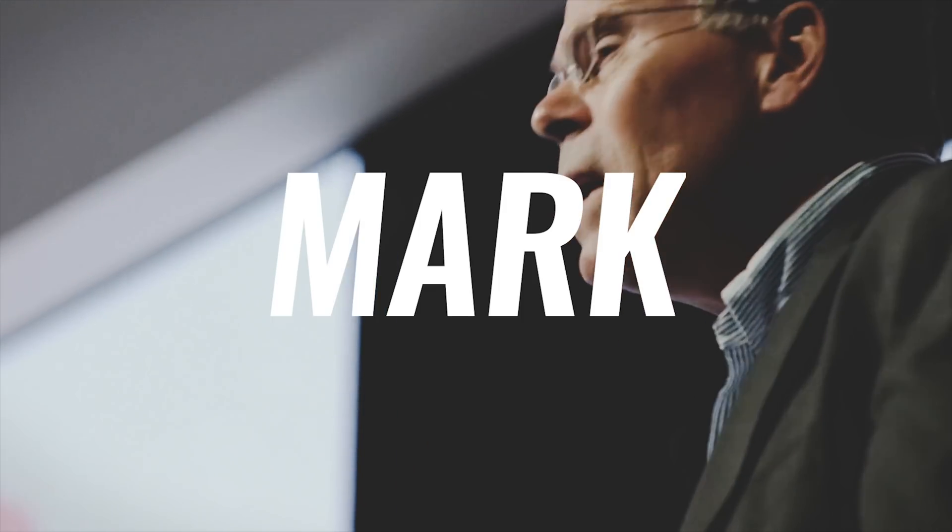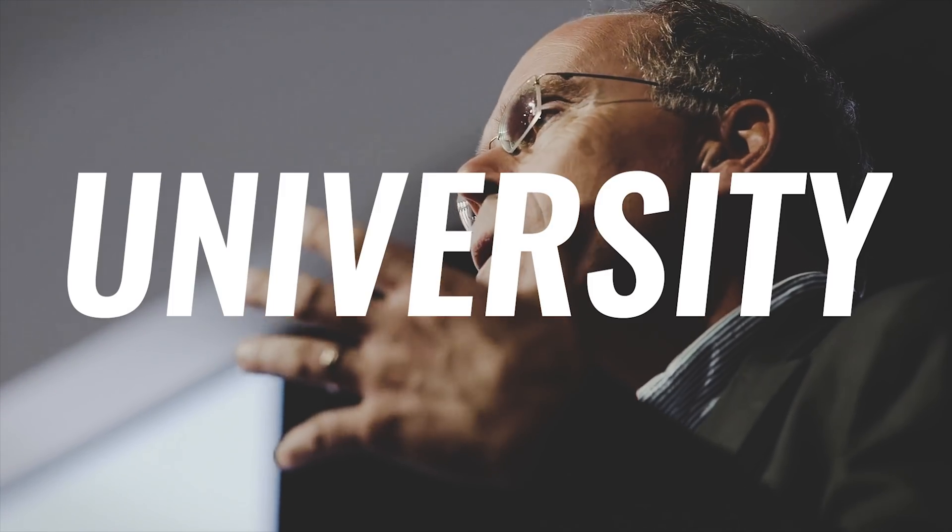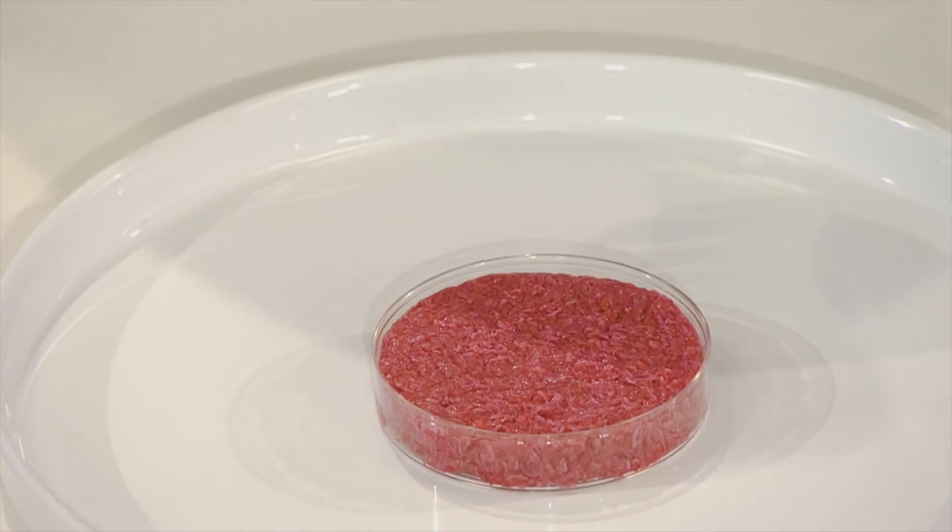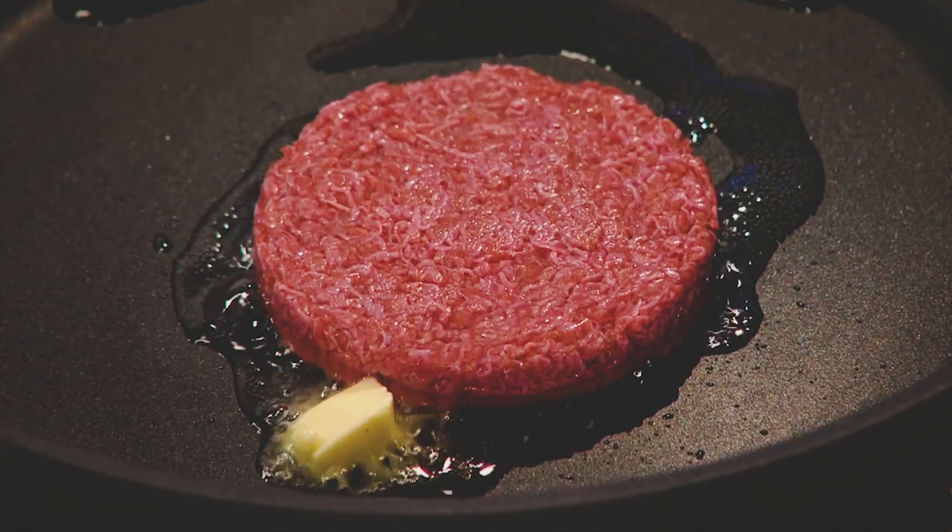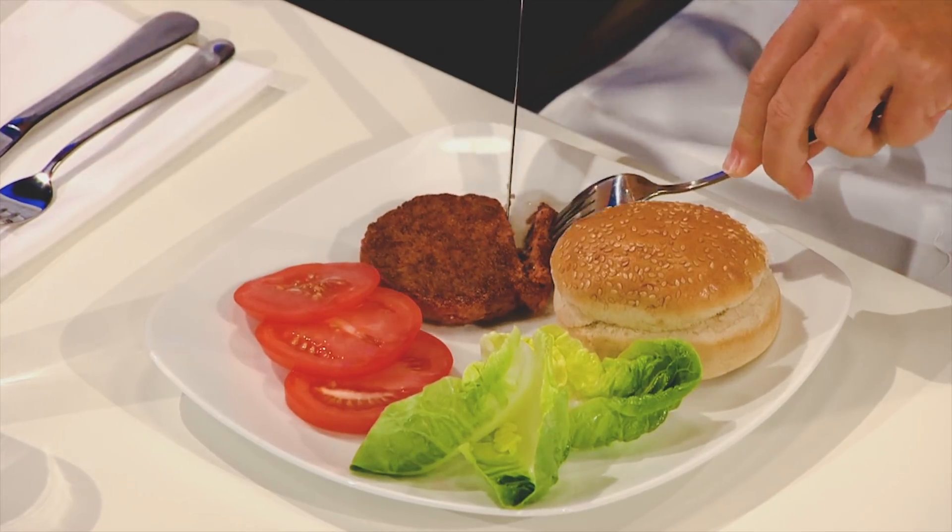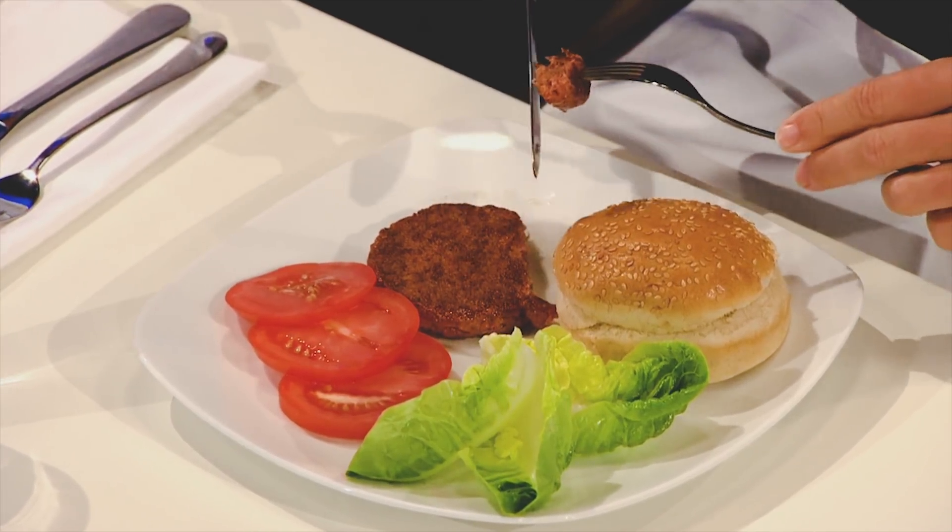This is how Mark Post's research group from the University of Maastricht made the world's first cultured hamburger, costing around 250,000 euros or 325,000 dollars. The price was this high because the burger was made of around 20,000 tiny strips of meat, separately hand-grown and then combined.